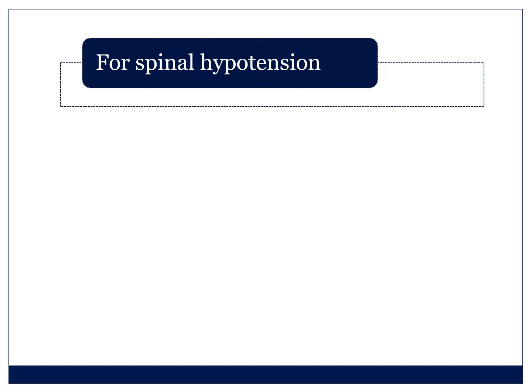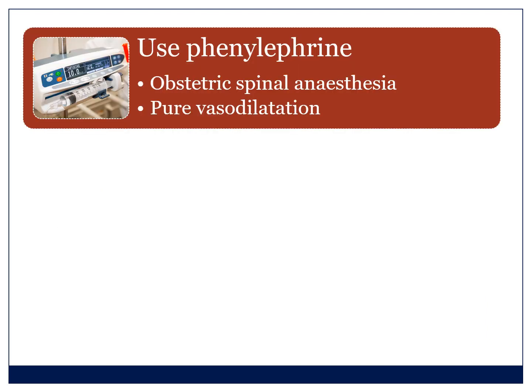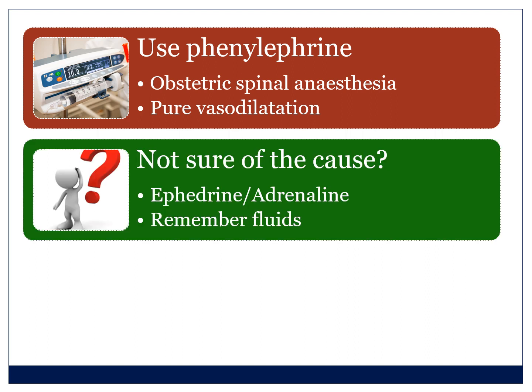We want to use phenylephrine for spinal hypotension. We don't want to use it in bleeding patients, in general anesthesia, or after the baby is delivered and the oxytocin is in. If patients are hypotensive in those scenarios, I don't reach for phenylephrine infusions as my first-line vasopressor — I choose something with inotropy and chronotropy such as ephedrine or adrenaline. We use phenylephrine for pure vasodilatory states, which occurs usually in obstetric spinal anesthesia where cardiac output is excellent but the patient is vasodilated. If you're not sure of the cause, choose ephedrine or adrenaline and give fluids until you can establish the cause.